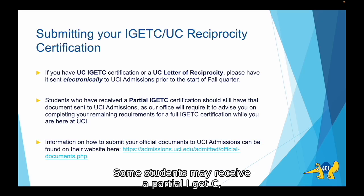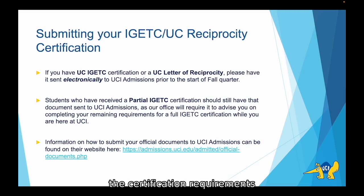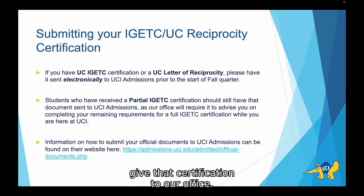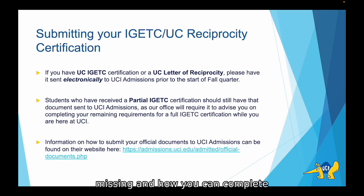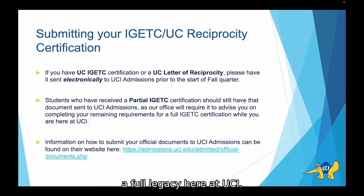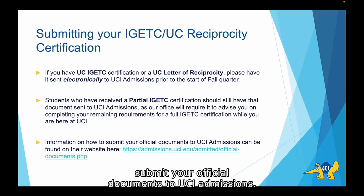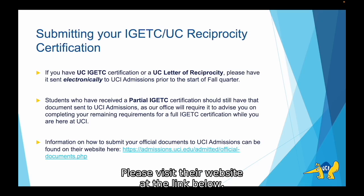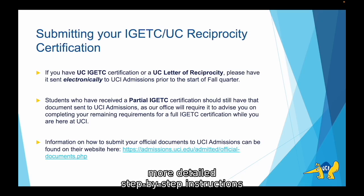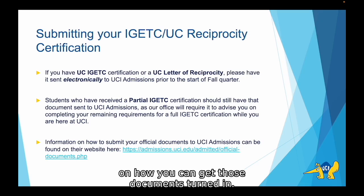Some students may receive a partial IGETC, which means they've completed some but not all of the IGETC certification requirements at their community college. If you do receive a partial IGETC, please give that certification to our office — we'll need that document to advise you on what you're missing and how you can complete the remaining requirements to get a full IGETC here at UCI. If you'd like more info on how to submit your official documents to UCI admissions, please visit their website at the link below for detailed step-by-step instructions.